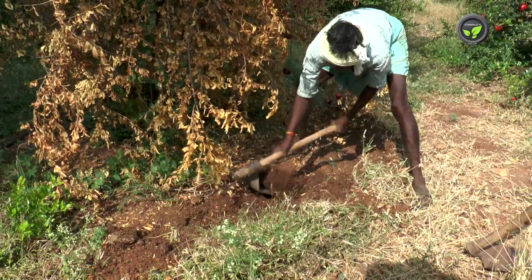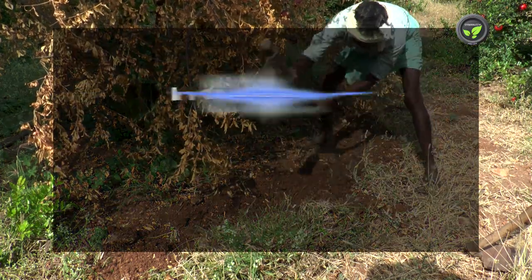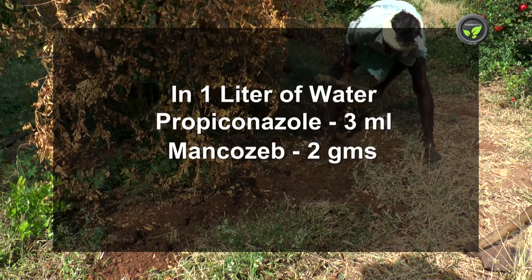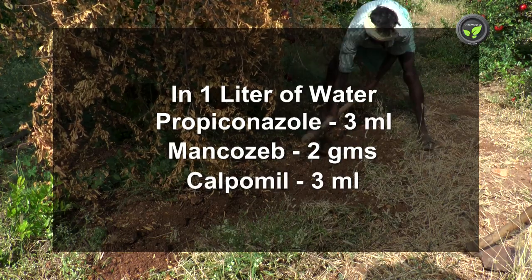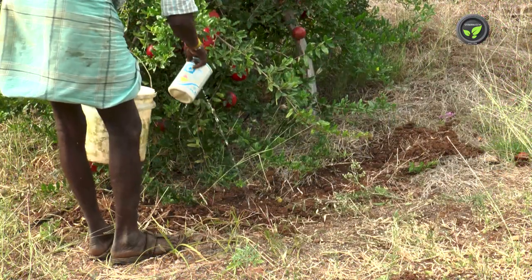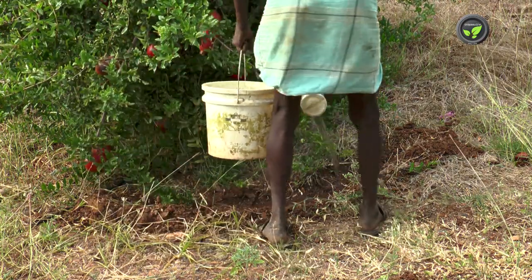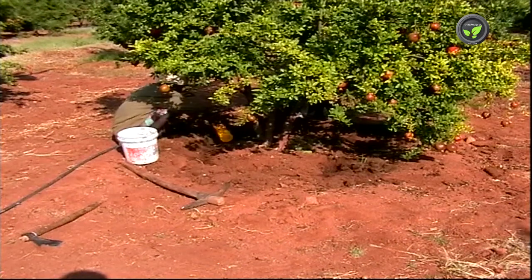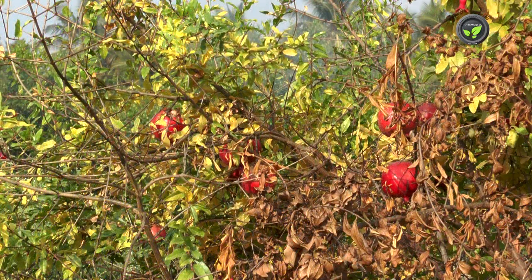Loosen the soil around the affected plant. Mix 3ml Propiconazole, 2g Mancozeb, and 3ml Fosetyl-Al in 1 litre of water. Drench 5 litres of the solution around the plant 2–3 times at weekly intervals. Treat the recovered plant again after one year. If the farmer neglects this fungal wilt disease, he will have to lose the garden.